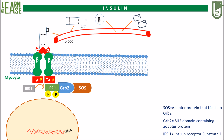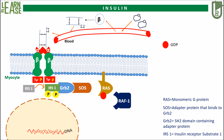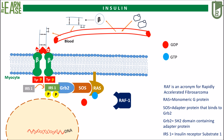There is another protein named RAS, which is a monomeric G protein also known as GTP binding switch protein. RAS is shown in its inactivated form, where it is bound to GDP. In the animation, GTP is also shown along with another protein named RAF kinase. RAF is an acronym for Rapidly Accelerated Fibrosarcoma.